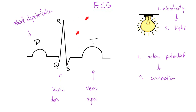This is your ECG or EKG — electrocardiogram. It has a P wave, QRS complex, and T wave. The P wave represents atrial depolarization. The QRS represents ventricular depolarization, which is activation. The T wave represents ventricular repolarization. Where is atrial repolarization? It is masked under the QRS complex, because the QRS is large enough to hide the atrial repolarization underneath it.